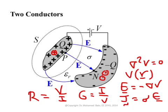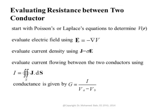This conductance or resistance is due to the finite conductivity of the dielectric, which should ideally be zero but is not. The procedure for calculating resistance between two conductors is: first, solve Poisson or Laplace equation. Usually there is no volumetric charge density, so we start with Laplace equation and solve the boundary value problem to get V(r) — the potential at every point in the region between the two conductors.